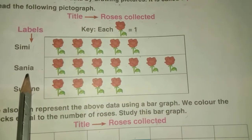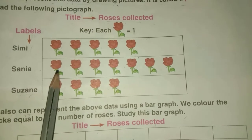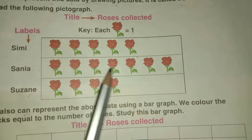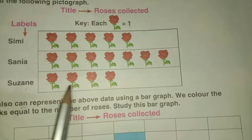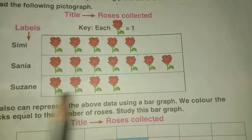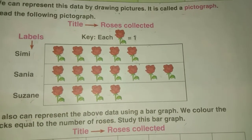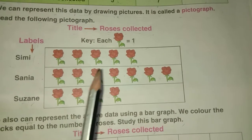Simi collected five roses, so you draw five flower symbols: one, two, three, four, five. Sanya collected seven roses: one, two, three, four, five, six, seven. Suzanne collected four: one, two, three, four. This is the pictograph — drawing pictures to represent data.